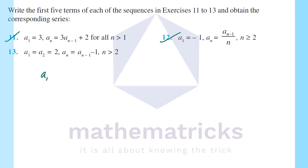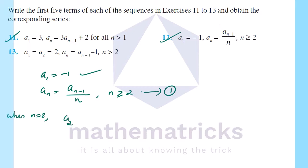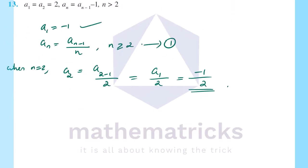Question 12: a₁ = -1 and aₙ = aₙ₋₁ / n for n ≥ 2. Finding a₁ through a₅: a₂ = a₁ / 2 = -1 / 2. Then a₃ = a₂ / 3 = (-1/2) / 3 = -1/6.